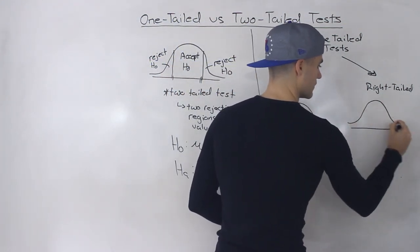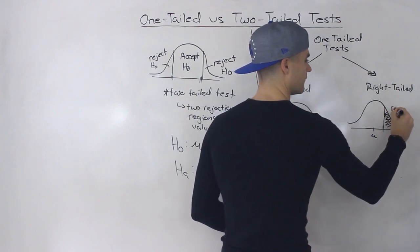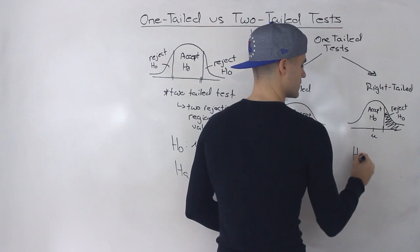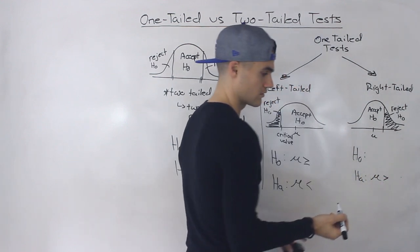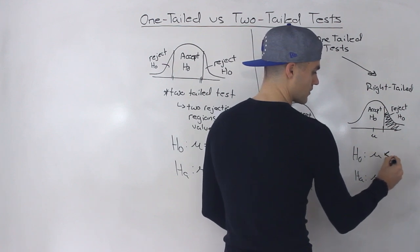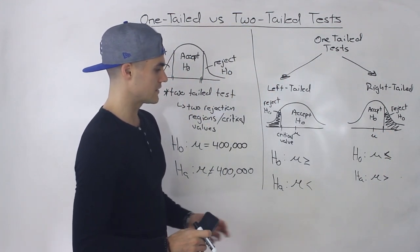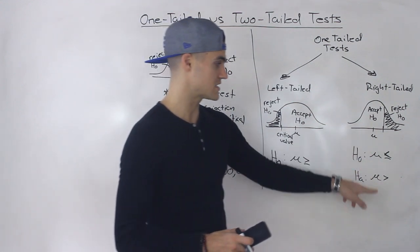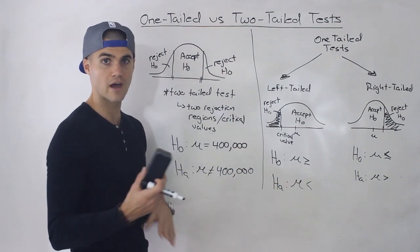For a right-tailed test, we have the average in the middle and the rejection region is on the right side. So we reject the null on the right and accept it on the left. The alternative hypothesis here is that the sample average is a lot greater than what the null states. The null is that the population mean is equal to or less than something, and the alternative is that it's greater.